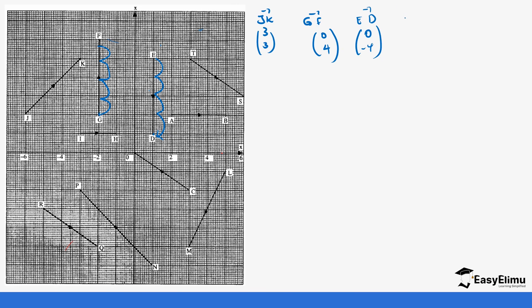For vector TS: on the y-axis it moves one, two steps downward, so it's negative two; on the x-axis it moves one, two, three steps in the negative direction, so it's negative three. You need to be careful whether movement is positive or negative. For vector CO: on the y-axis it moves one, two steps upward — positive two; on the x-axis it moves one, two, three steps in the negative direction — so it's negative three.